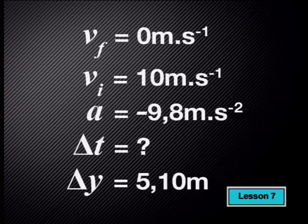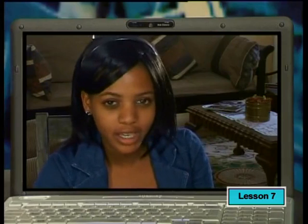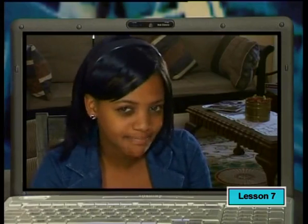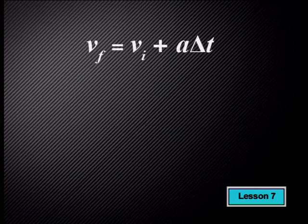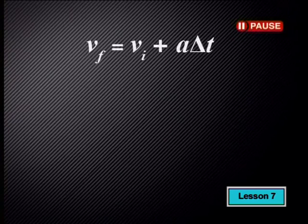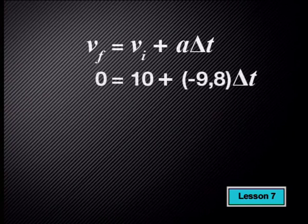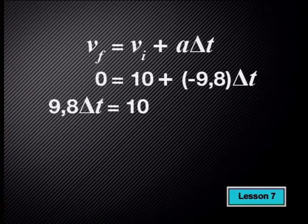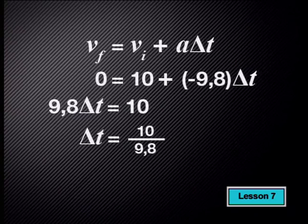A handy tip: try not to use a value that you have calculated. Look at our list again to choose the equation. We use final velocity equals initial velocity plus acceleration times change in time. Substituting: 0 equals 10 plus negative 9.8 times delta t. So 9.8 delta t equals 10. Dividing both sides by 9.8, the time taken for the ball to reach its maximum height is 1.02 seconds.